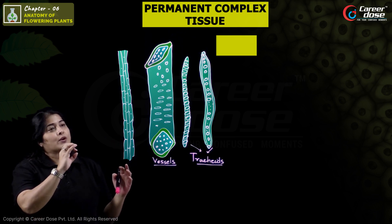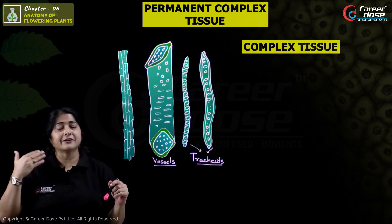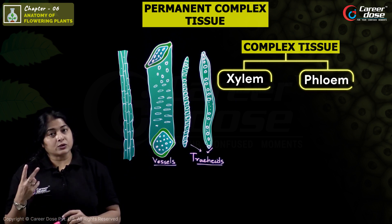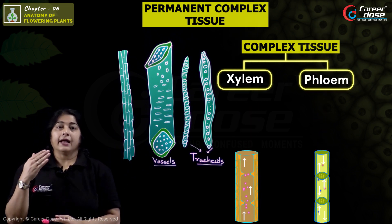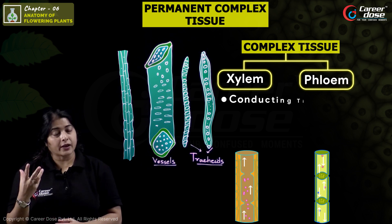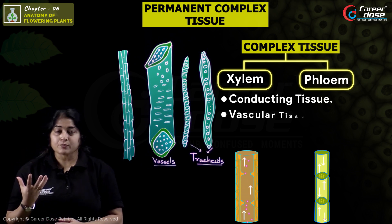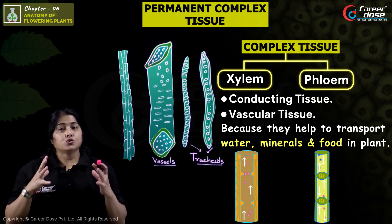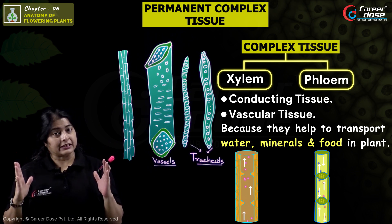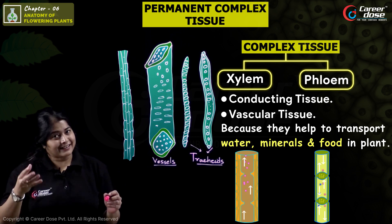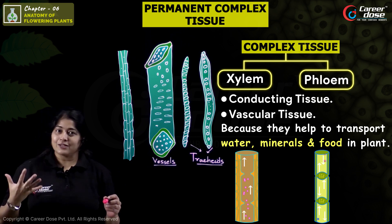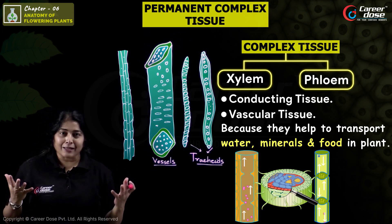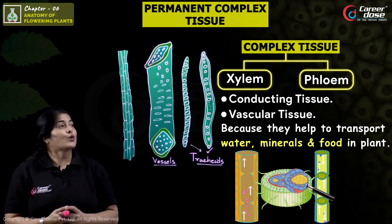Complex tissues are different — they are made of different types of cells. There are two types of complex tissues: Xylem and Phloem. Both are conducting tissues, also called Vascular Tissues, because they transport water, minerals, and food through the plant.